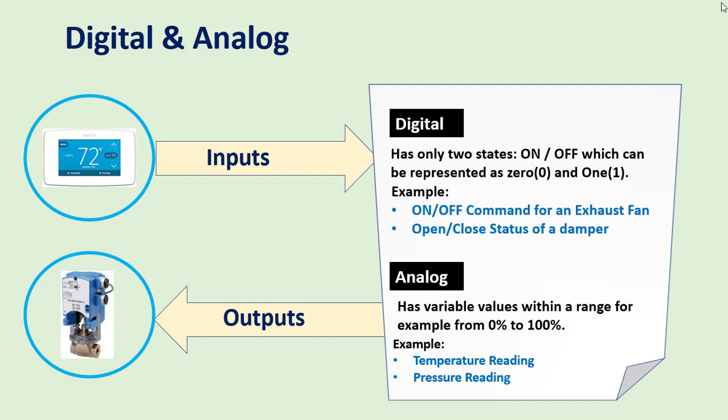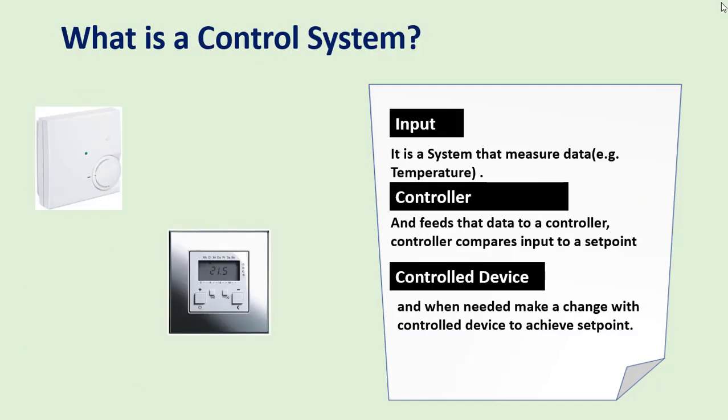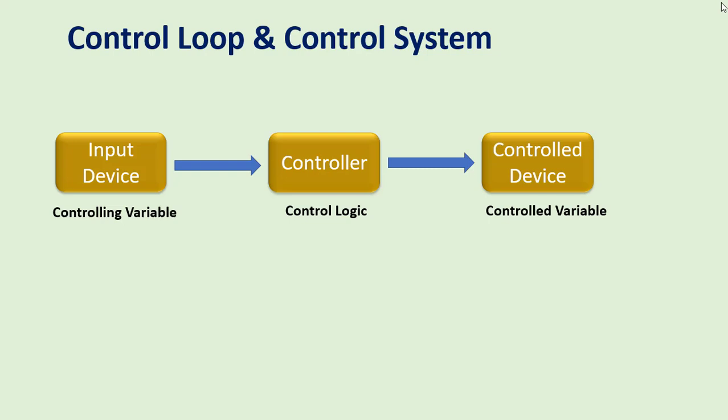To summarize, a control system measures data — for example temperature — and feeds that data to a controller. The controller compares the input to a setpoint, and when needed makes changes with the control device to achieve the setpoint. A simple control loop is defined as one input to a controller housing the control logic, which provides an output to a control device. A controller will typically contain a collection of control loops to manage a system.